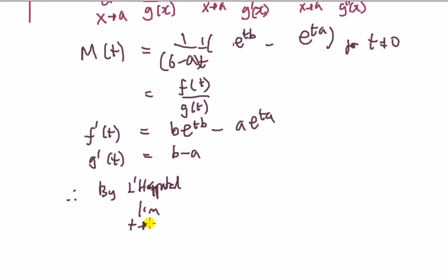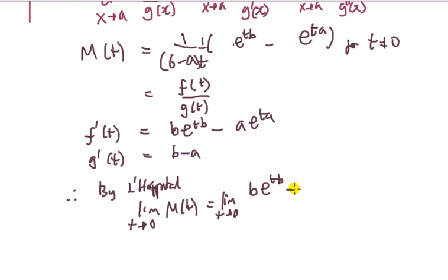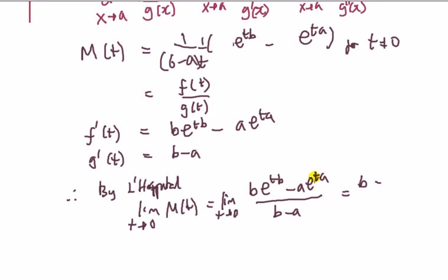The limit as t tends to 0 equals the limit as t tends to 0 of the first derivative of the top over the derivative of the bottom. As t tends to 0, e^(t) tends to e^0 which is 1, so the top becomes b minus a, and the bottom is also b minus a — answer: 1. That's by L'Hôpital.